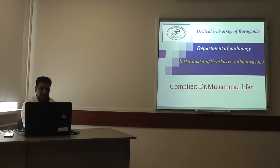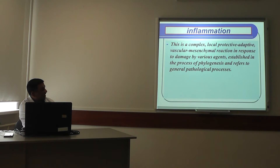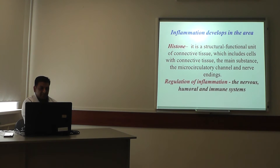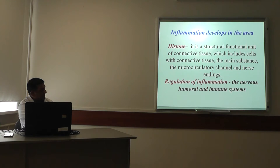Good afternoon students. Today our lecture is on inflammation and exudative inflammations. Inflammation is a complex local protective adaptive vascular mesenchymal reaction in response to damage by various agents, established in the process of phylogenesis, and refers to the general pathological process. Inflammation develops in dead territories or histions, which are structural functional units of connective tissue that include cells, connective tissue main substance, microcirculatory channels, and nerve channels. Regulation of inflammation involves the nervous, humoral, and immune systems.